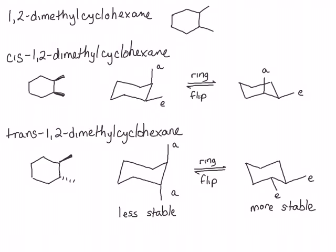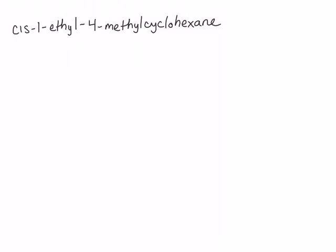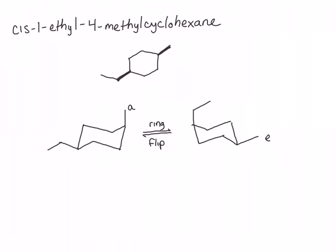All of our examples so far of disubstituted cyclohexane rings have had two of the same substituent. What happens when we look at larger substituents? The larger the group, the higher the preference it has for being in an equatorial position. If there are two substituents of different sizes and both cannot be equatorial, the more stable conformer will have the larger group in the equatorial position. For example, in cis-1-ethyl-4-methylcyclohexane, the conformer that has the largest group equatorial is the most stable, because those 1,3-diaxial interactions only get worse as the group gets larger.